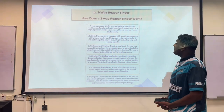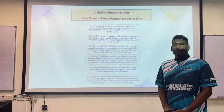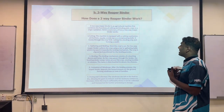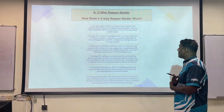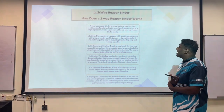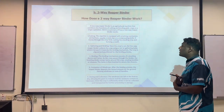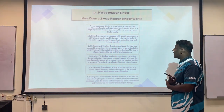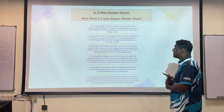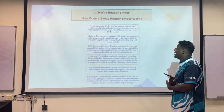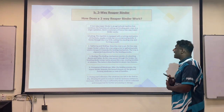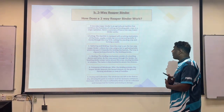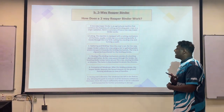The second type is the two-way reaper binder. A two-way reaper binder is an agricultural machine that combines the functions of cutting and binding grain crops in a single operation. Here is a summary of how it works. Firstly, cutting: the machine is equipped with a cutting mechanism at the front, usually a sickle bar or a reciprocating knife. It moves through the crop field, cutting the standing crops and forming a swath. Next, gathering and binding: once the crop is cut, the two-way reaper binder collects the crops using a reel or gathering belt, which transports it towards the binding mechanism.